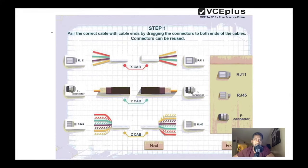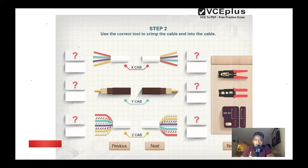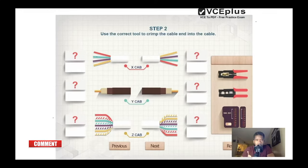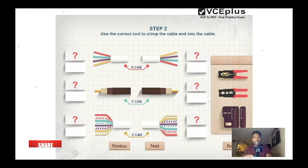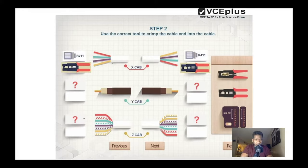Now let's move to the next simulation. Here you need to use the correct tool to crimp the cable ends onto the cables. The X cable still has two pairs of wires, same as we saw in the first simulation. You'll need to identify what type of crimping tool to use. The tool shown here can crimp both RJ-45 and RJ-11 cables. So for the X cable, you use the RJ-11 connector and the crimping tool that handles RJ-11.